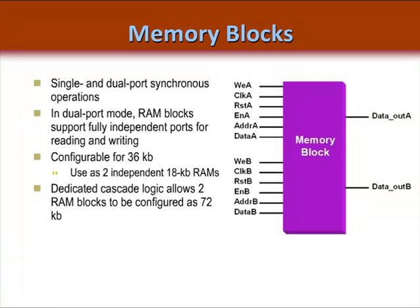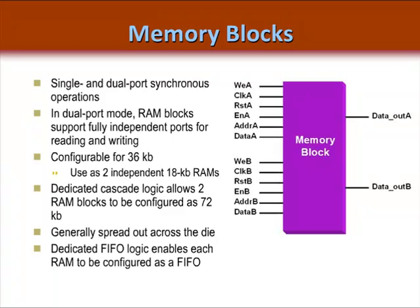Vertex 5 also has dedicated cascade logic that allows two block RAMs to be configured as a 72 kilobit memory. While these blocks of memory are generally spread out across the die in columns, this feature enables larger memories and higher performance. Also note that these block RAMs have dedicated FIFO logic associated with each block, so high-performance FIFOs can be made without using any extra CLB logic.